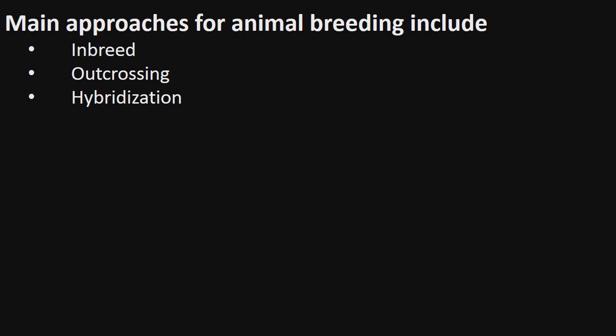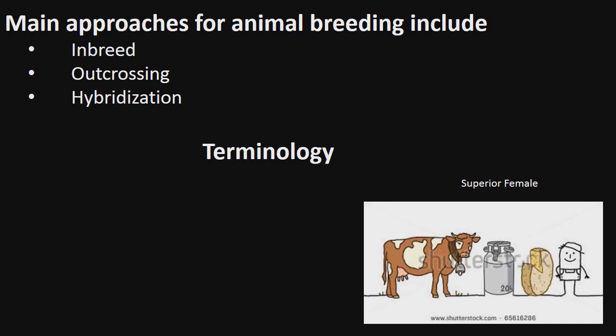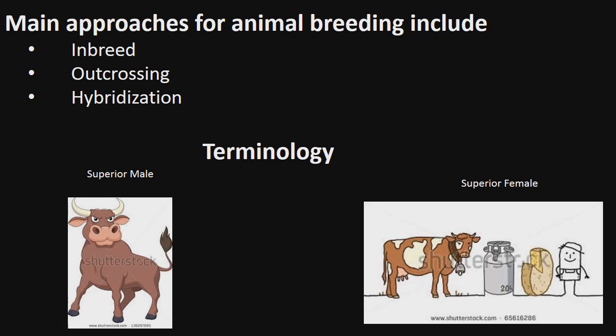In order to understand the next few slides, terminology such as superior male and superior female has to be understood. A superior female in cattle is a cow that produces more milk per lactation. A superior male in cattle is a bull which gives rise to superior progeny as compared to those of other males.